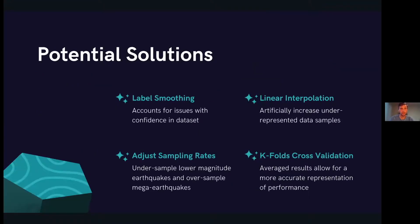The main solutions we have for the imbalanced data are: label smoothing, which makes the model less confident and tries to prevent overfitting; linear interpolation to artificially increase the amount of data; and adjusting sampling rates to undersample the overrepresented data and oversample the data we don't have much of, like the mega earthquakes. We've also implemented k-folds cross-validation to get a more accurate representation of how the model is performing.